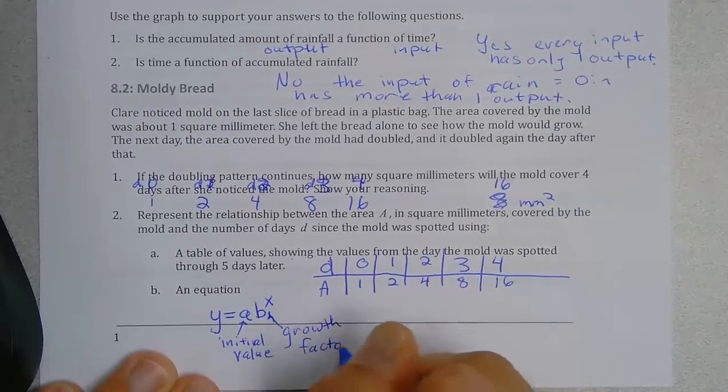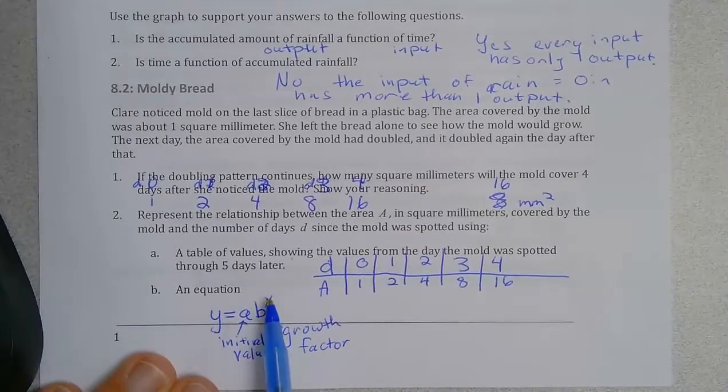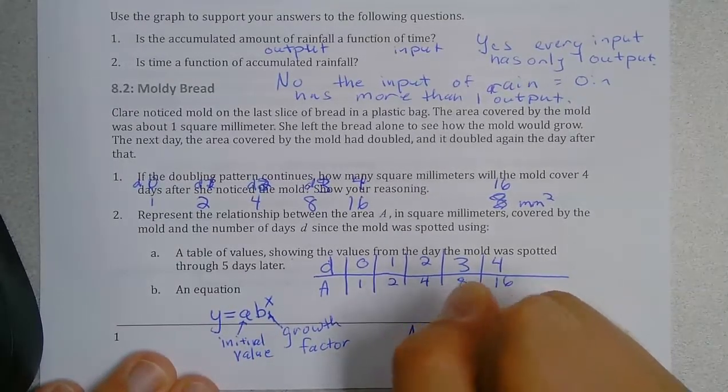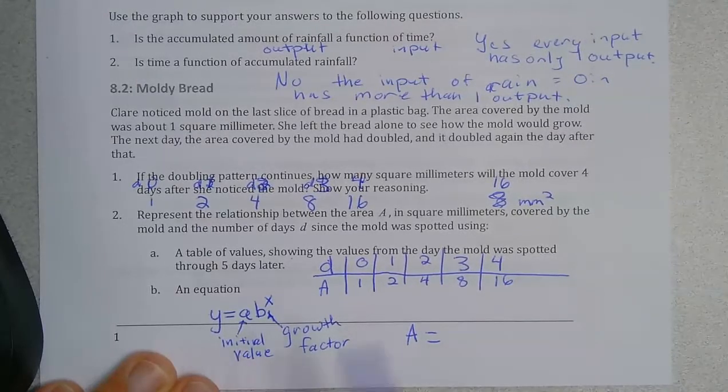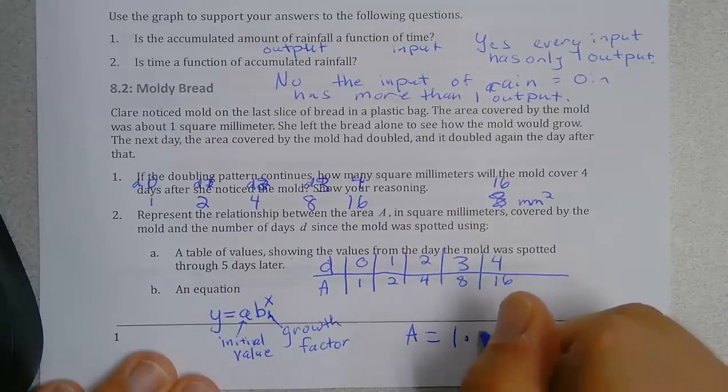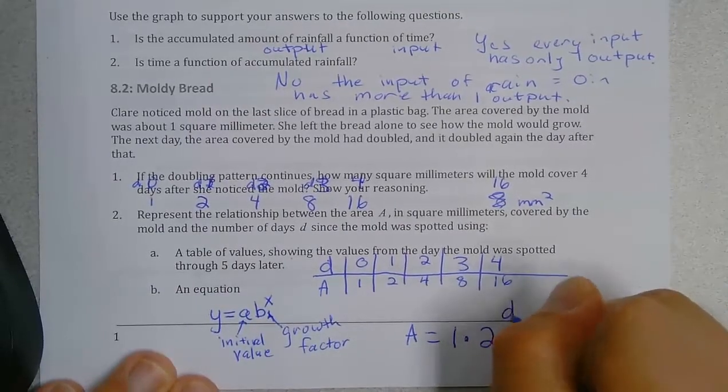Now in this case we're going to use a capital A to stand for the area of the mold and our initial value was one times our growth factor was two to the day power.